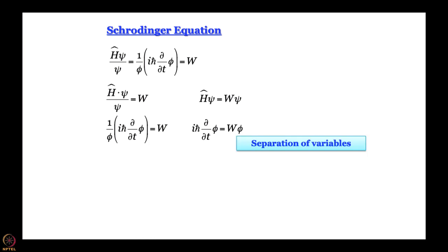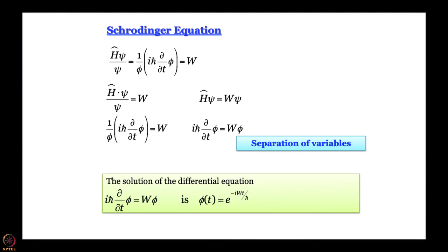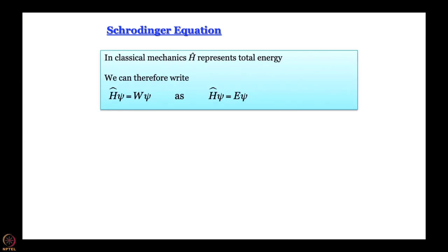We have obtained separation of variables. The time-dependent part of the wave equation is straightforward to solve and gives e^(−iWt/ℏ). To answer what W is, we take the lesson from classical mechanics: the Hamiltonian represents total energy and is the total energy operator. So when the Hamiltonian operates on the function and gives W·ψ, from classical mechanics we know that W must equal E, the energy. Therefore Ĥψ = Eψ — this is the form of Schrödinger's equation most popular among chemists and the one we will use for the rest of the course.